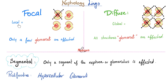When I say focal, it means only a few glomeruli. When I say diffuse, almost all of the glomeruli are affected. When I say segmental, only a segment of the nephron is affected. Proliferative means that the glomerulus is getting hypercellular. So diffuse proliferative glomerulonephritis means basically almost all of your glomeruli are affected, they are hypercellular and inflamed — that's why it ends in itis, and you're leaking protein and blood in the urine.